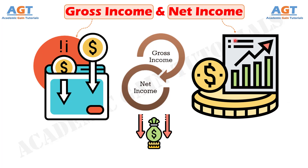From the taxation point of view, gross income is the income earned from various sources by an individual or enterprise. Technically, it is the gross total income. On the other hand, net income is the total income after deducting all the allowable expenses and set off and carry forward of losses.